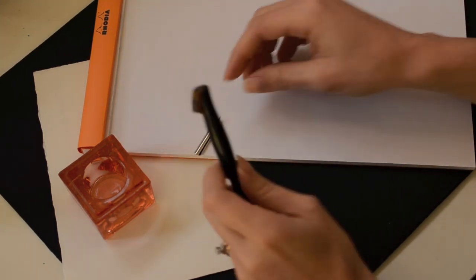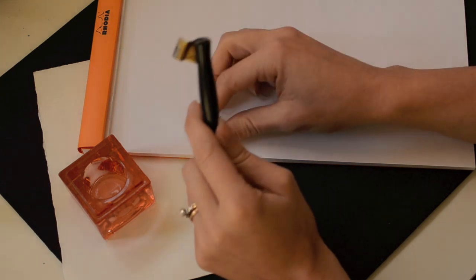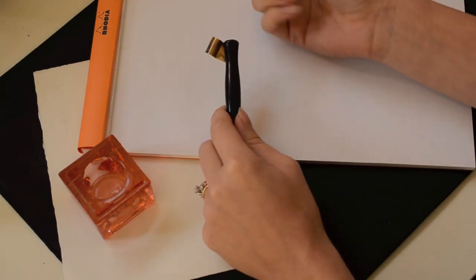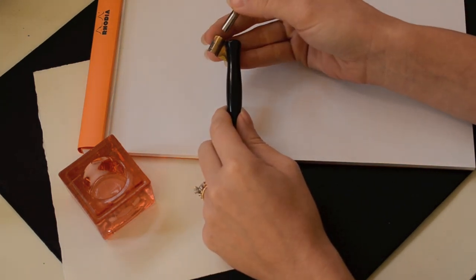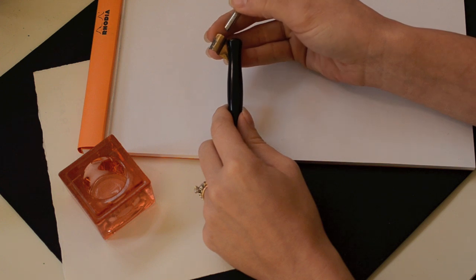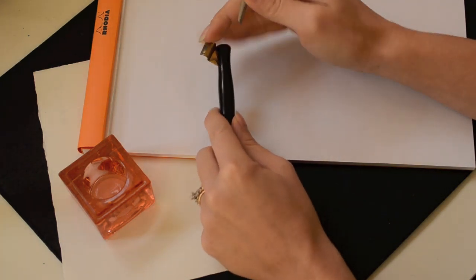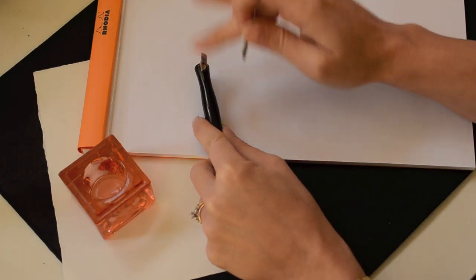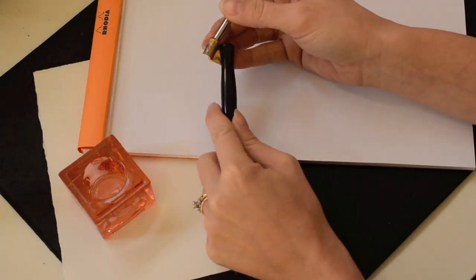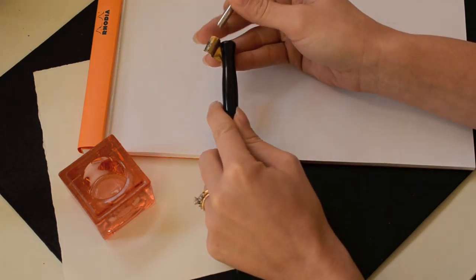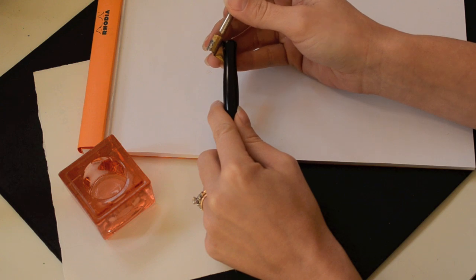What I normally do is hold it in my left hand and then you take the nib, and this can be kind of tricky, especially with a new pen. This flange can be really tight, so don't hesitate to use a little force to get it in there because that can be necessary.